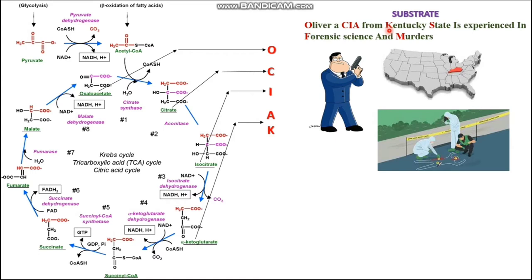A from CIA and K from Kentucky. And the letter S of state represents succinyl-CoA and succinate. The letter F of forensic science represents fumarate, and the letter M of murders represents malate.